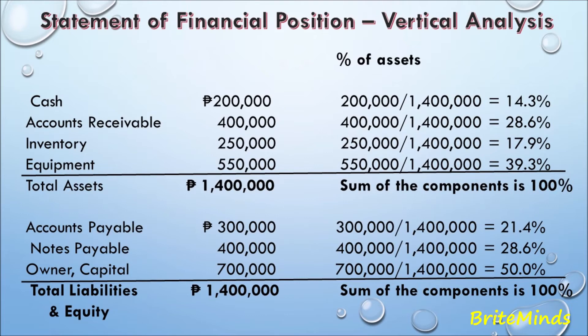Moving to liabilities and equities — the base amount is still total assets. Accounts payable: 300,000 pesos divided by 1,400,000 gives 21.4%. Notes payable: 400,000 pesos divided by 1,400,000 gives 28.6%. Owner's capital: 700,000 pesos divided by 1,400,000 pesos gives 50%. The sum of liabilities and equities components is 100%.